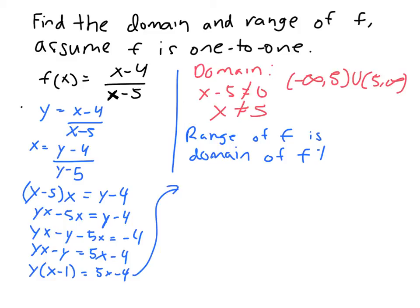So if I divide both sides by x minus 1, y equals 5x minus 4 divided by x minus 1. So f inverse of x is equal to 5x minus 4 divided by x minus 1.